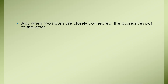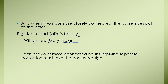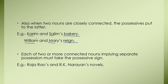Also, when two nouns are closely connected, the possessive sign is put to the latter. For example, 'Karim and Salim's bakery' — this means the bakery belongs to both Karim and Salim. 'William and Mary's reign' — this means the reign is of both William and Mary. Each of two or more connected nouns implying separate possession must take the possessive sign. Example: 'Raja Rao's and R.K. Narayan's novels' — here we are talking about novels of two different persons, so we are attaching the possessive sign to both Raja Rao and R.K. Narayan.